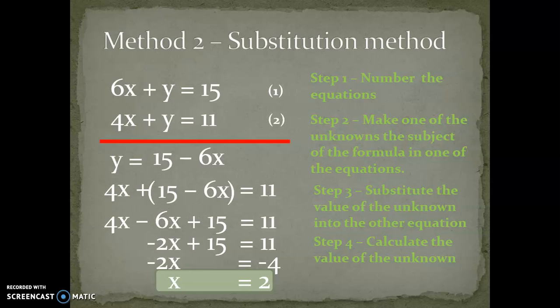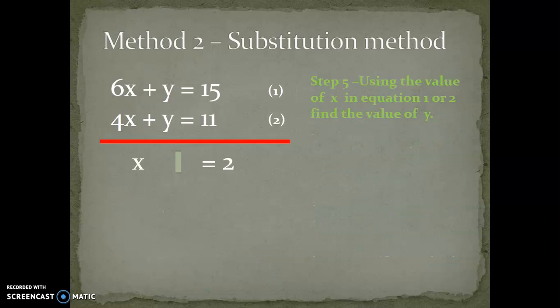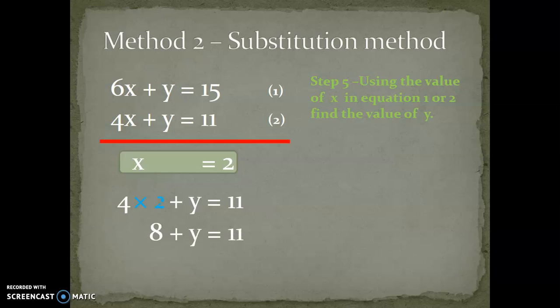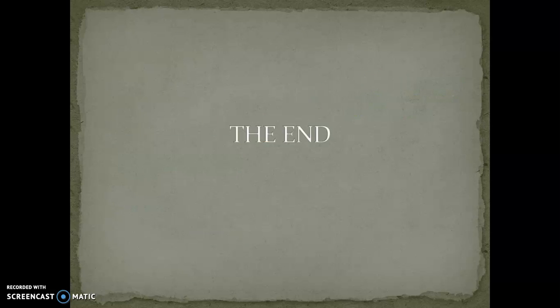Once we have found the value of x, we proceed to find the value of y. Substituting x equals 2 into 4x plus y equals 11 gives y equals 3. I hope today's lesson is useful and you can answer simultaneous equation questions in future. Thank you.